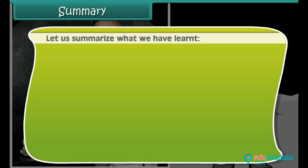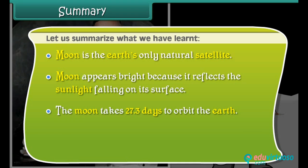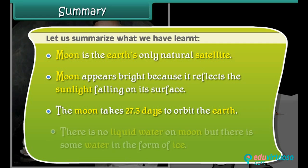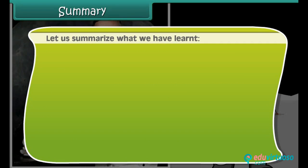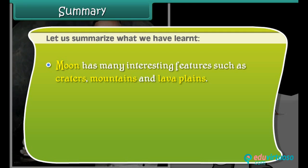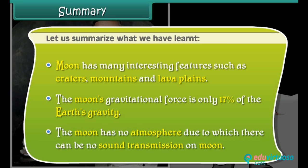Let us summarize what we have learned. The moon is the Earth's only natural satellite. The moon appears bright because it reflects the sunlight falling on its surface. The moon takes 27.3 days to orbit the Earth. There is no liquid water on the moon, but there is some water in the form of ice. The moon has many interesting features such as craters, mountains, and lava plains. The moon's gravitational force is only 17% of Earth's gravity. The moon has no atmosphere, due to which there can be no sound transmission on the moon.